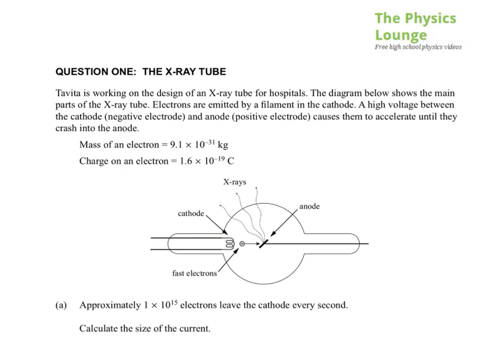You can see the little electron zooming across. High voltage between the cathode, negative electrode, so that's negative, and the anode positive electrode causes them to accelerate until they crash into the anode. Mass of an electron, charge on an electron, and then diagram to help us.